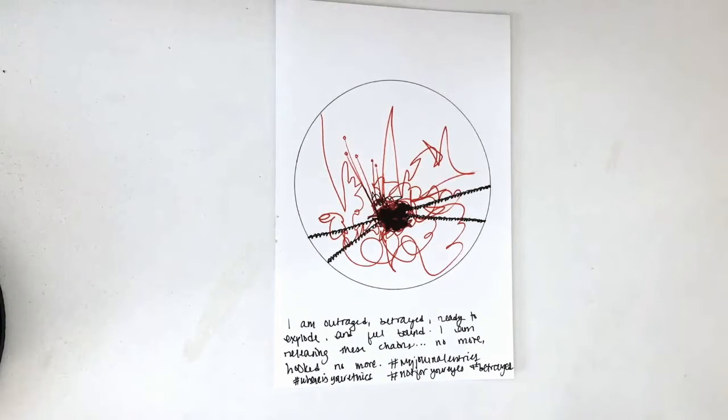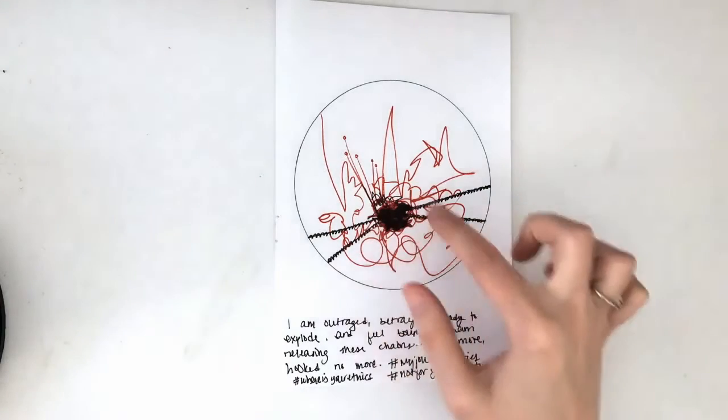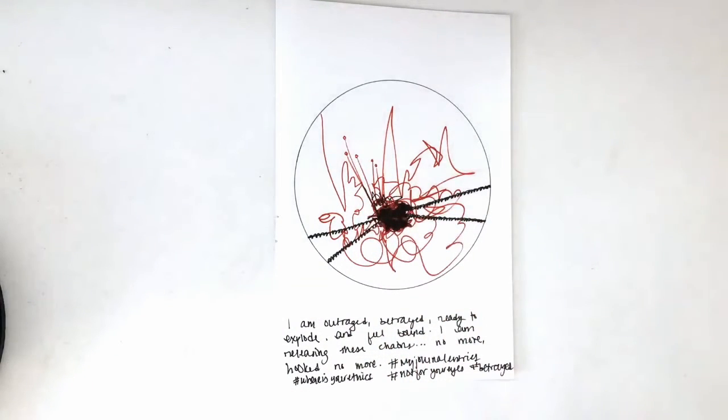So for this one, it says I am outraged, betrayed, ready to explode and feel bound. I am releasing these chains, no more hooked, no more. And so you can see there's a lot of tension that color of red, for me really helped to express some of that outrage.